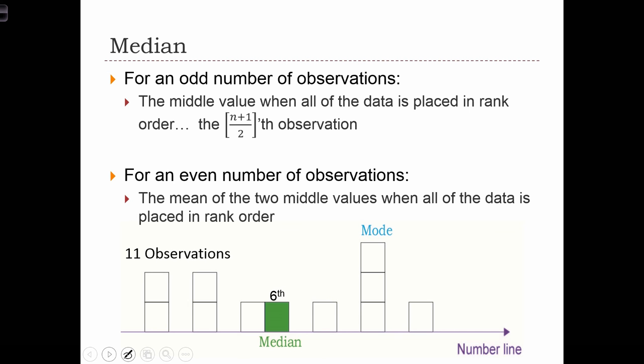The median is simply the middle value in the distribution when you order your values from high to low. So technically, if you have n values, n observations in your sample, then the middle value will be the n plus 1 over 2 value. So if you've got 7 observations in your data set, then the middle value we know is going to be the fourth value. But if you're unsure, you can apply the formula 7 plus 1 over 2 equals 4.